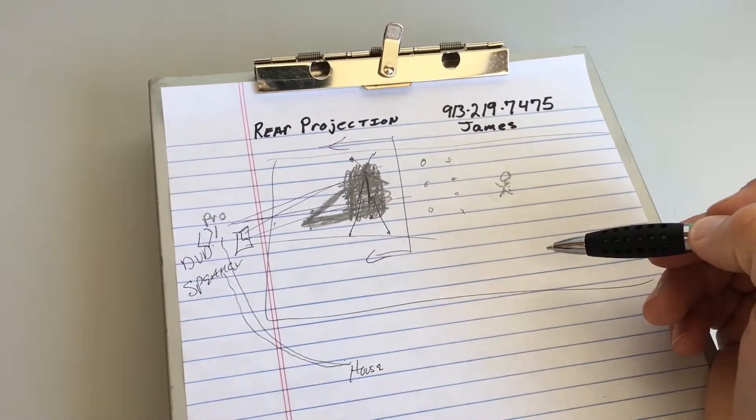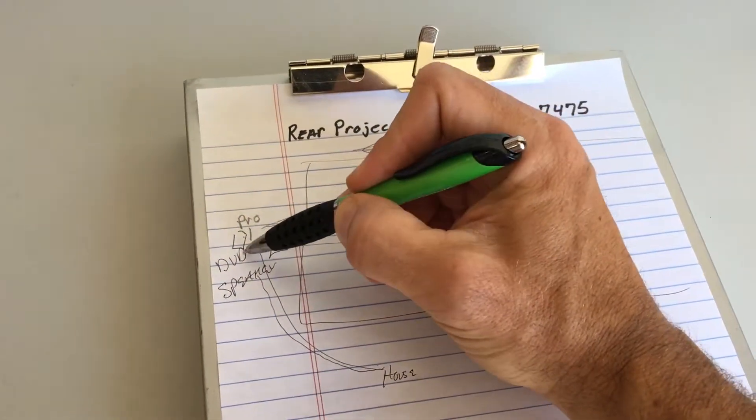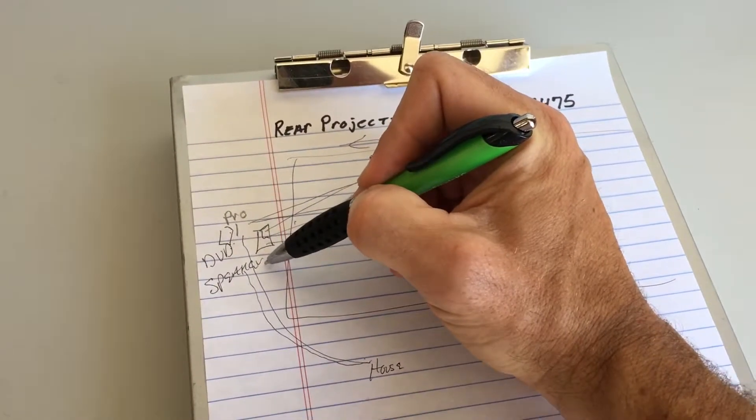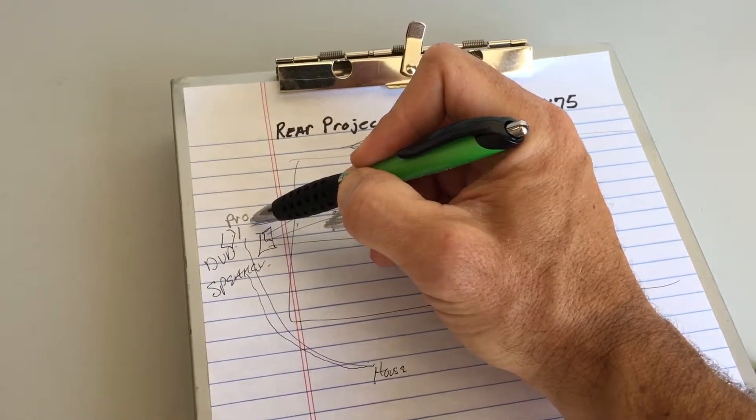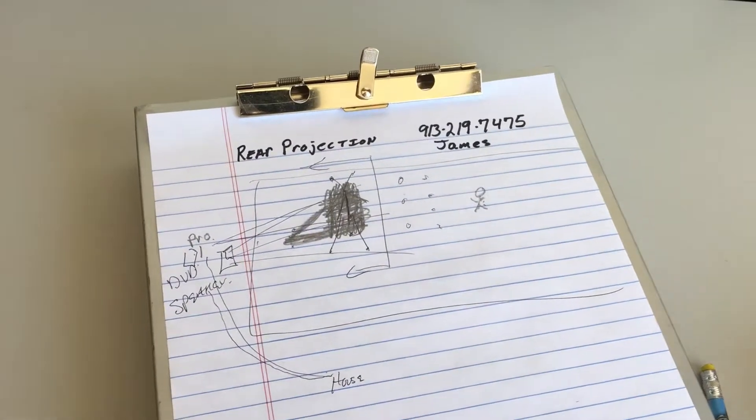I'll show you how it works with color coding. It sets up in the back here by the table. You hit play, adjust the sound of the speaker and turn on the projector. It's all color coordinated. It's simple to use.